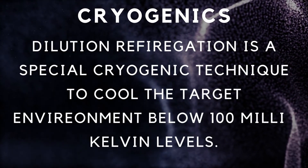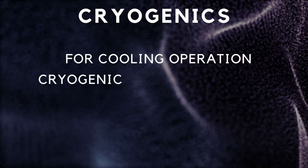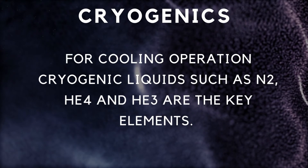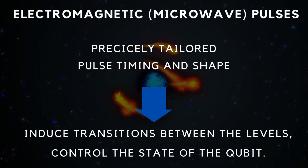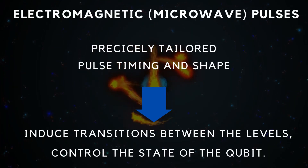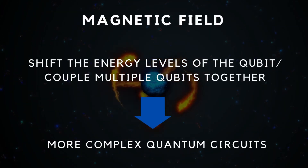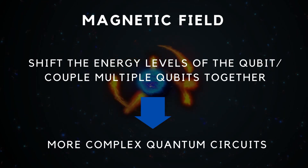The electrodes are patterned onto a substrate such as silicon, sapphire, or magnesium oxide. Finally, the entire device is mounted in a cryogenic system called a dilution refrigerator, which cools the qubit to its operating temperature of a few hundred millikelvin. The qubit is then controlled and read out using microwave pulses that are sent through the dielectric resonator.